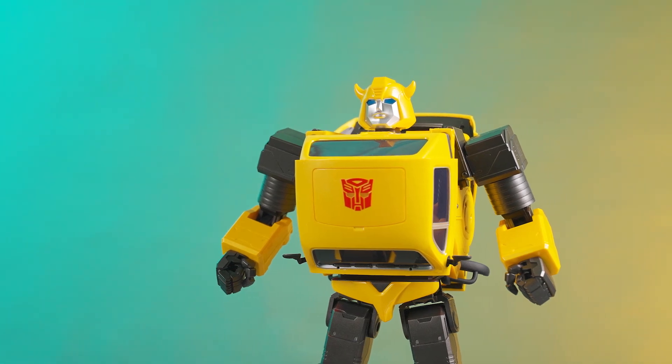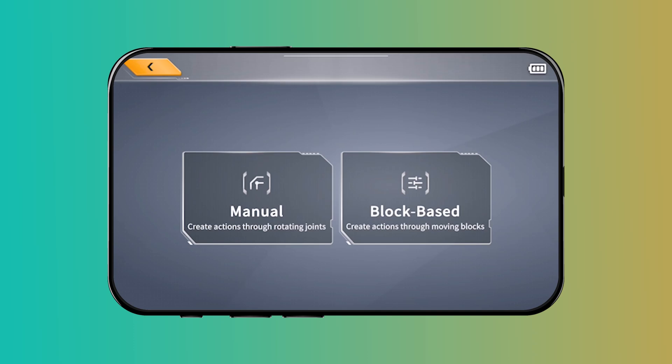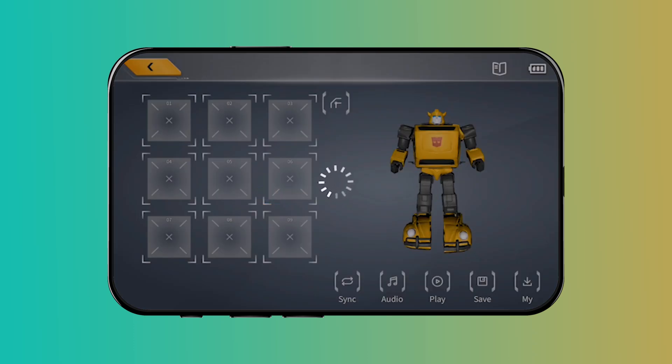This video will demonstrate how to use manual programming. Click create and select manual to enter the interface. Before we start programming, click the joint lock icon.